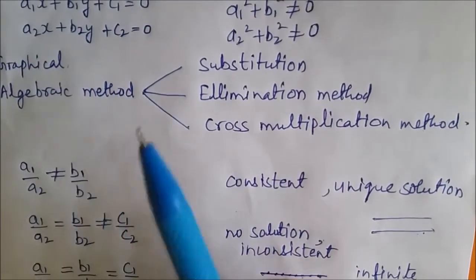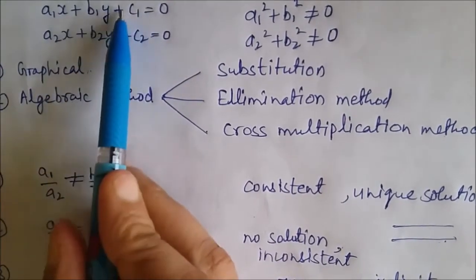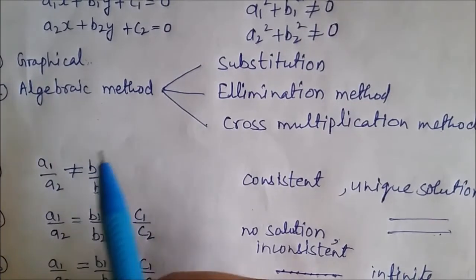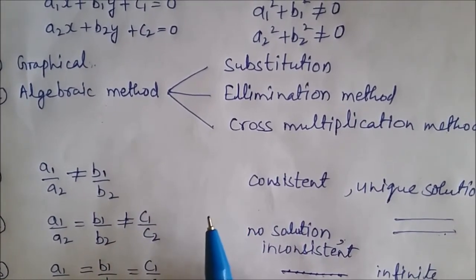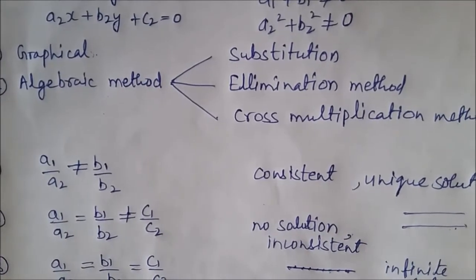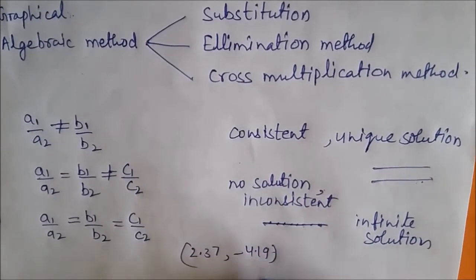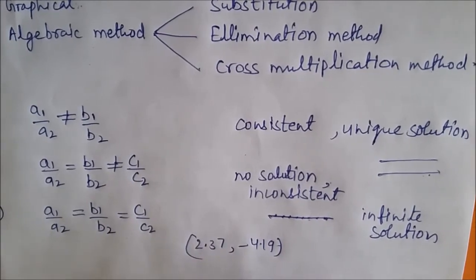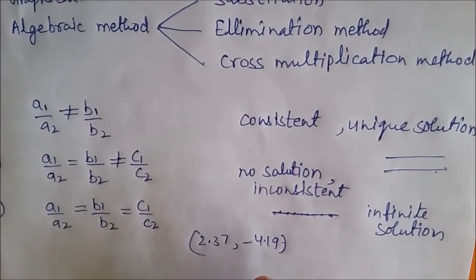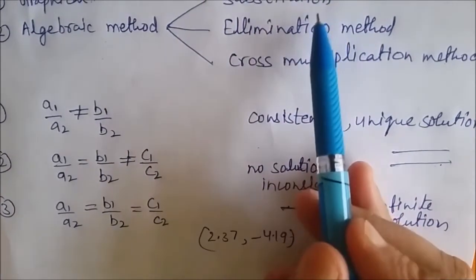To solve these equations we have two methods: number one is graphical method and number two is algebraic method. In graphical method, we draw the graph of each linear equation and find the point of intersection, which gives us the solution. But this method is not convenient because in some cases the point representing the solution has non-integral values — for example, they may intersect at the point 2.37, minus 4.19 — giving us inappropriate values of x and y. The algebraic method provides us the exact and correct solution of every pair of linear equations.